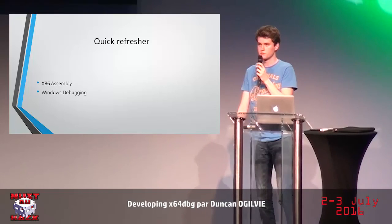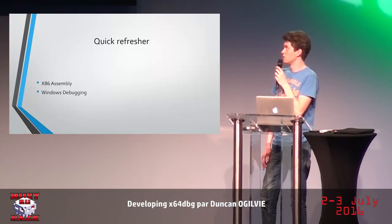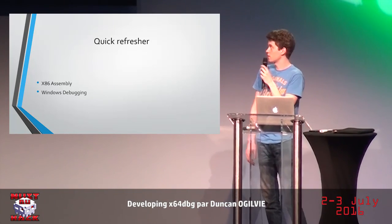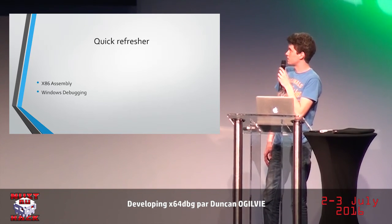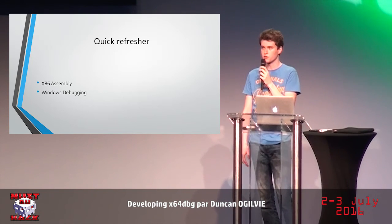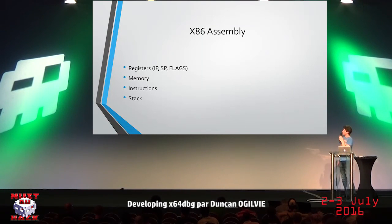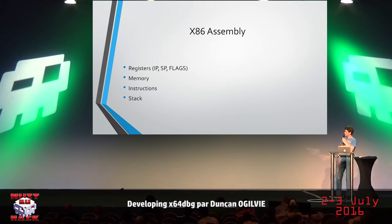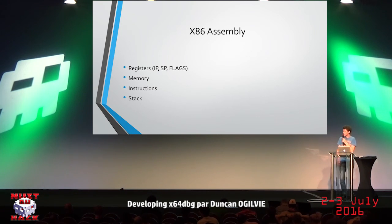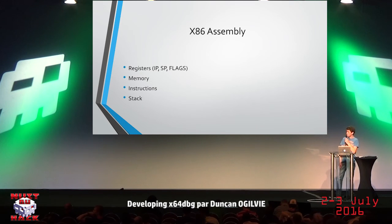Before I start talking about x64dbg itself, just a quick refresher on x86 assembly, because that's what we'll be looking at. After that, I'll give a quick overview of how Windows debugging works internally. So x86 assembly is pretty simple if you don't think about it too much. You have a few registers — some are special registers that point to the current instruction, to the top of the stack — and you have a flags register. Then there's memory, in which there's instructions that your processor will execute, and there's a stack which is pointed to by the stack pointer.